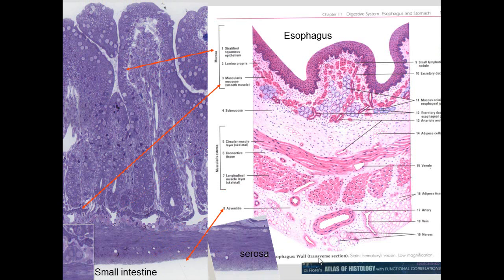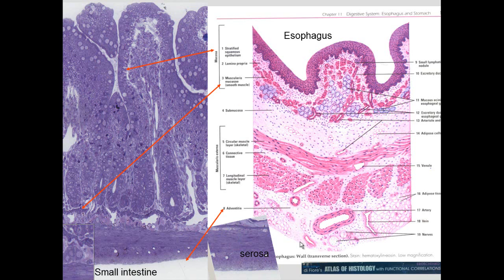If you look at the esophagus earlier in the GI tube, three things are different. Instead of simple columnar epithelium, you have stratified squamous. The muscularis mucosa is intermittent rather than continuous. Also, instead of a serosa, you have adventitia — firmly attached to the outside — because you don't want the esophagus moving when you're swallowing food.